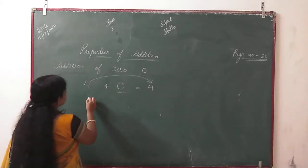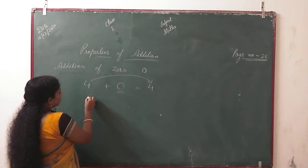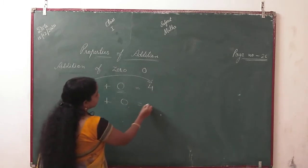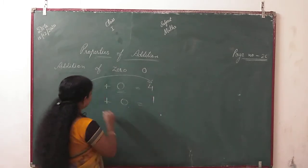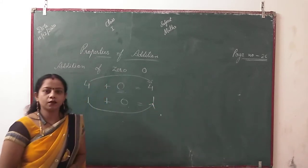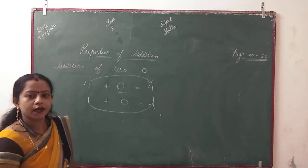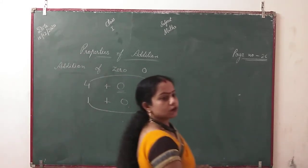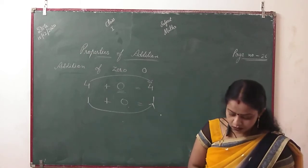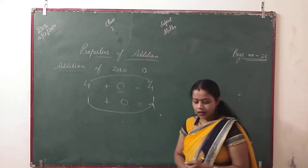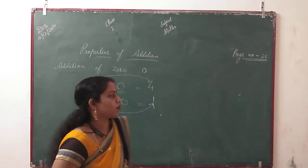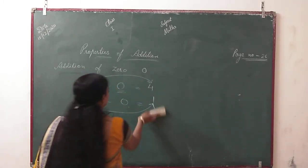1 plus 0 will give the same answer. If we add 0 with any number, the answer is the given number. When 0 is added to a number, the answer is the number itself. This is the second property of addition.